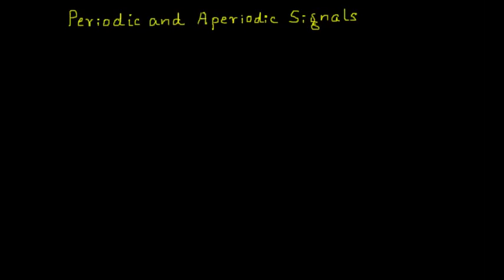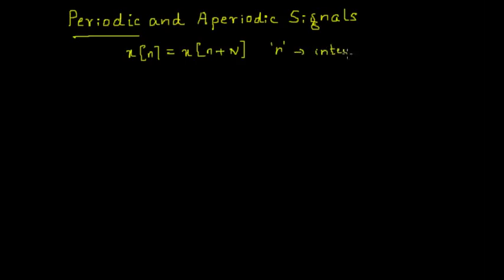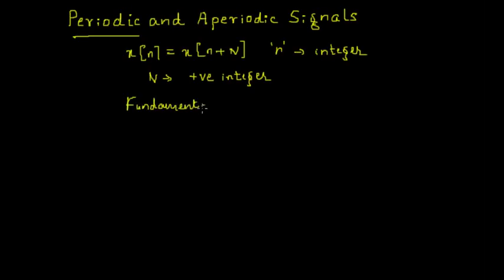Now we'll consider periodic and aperiodic signals with respect to discrete time signals. A discrete time signal is said to be periodic if it satisfies the condition x of n equals x of n plus capital N, where lowercase n is an integer. This is a clear difference from continuous time signals — for continuous time it holds for all t, while for discrete time n is only an integer. Capital N is a positive integer, and the smallest integer N satisfying this condition is known as the fundamental period.